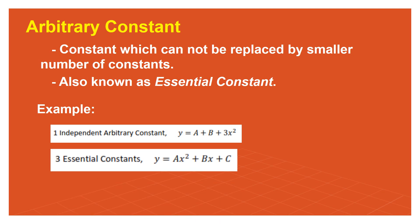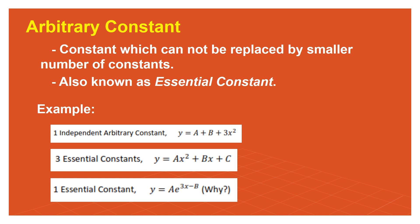For three essential constants, if we have a, b, and c with their own different entities — a with x², b with x, and c with no variable — we have three essential constants. And for one essential constant, if our equation is y = ae^(3x - b), we will simplify the terms to determine how many constants there are. It is important to know the number of independent arbitrary constants because that determines how many times we differentiate the equation.